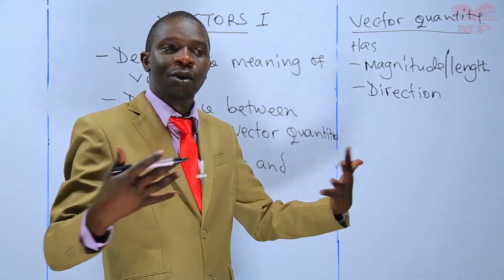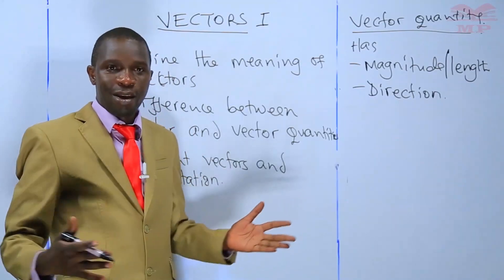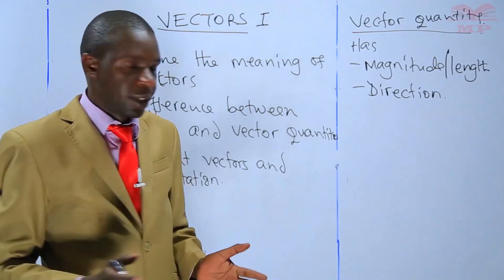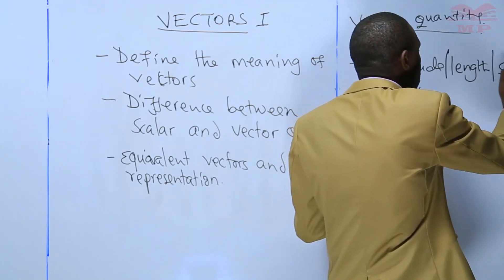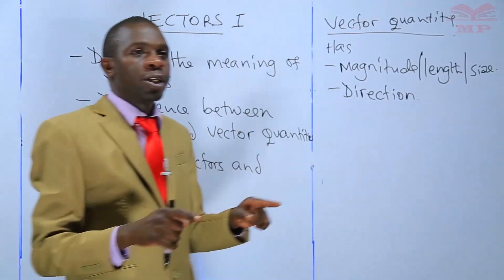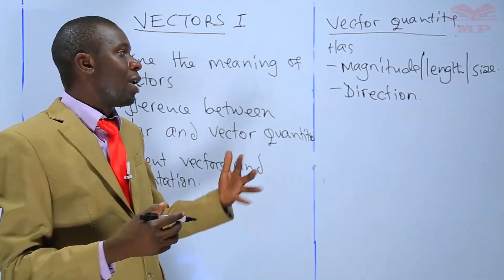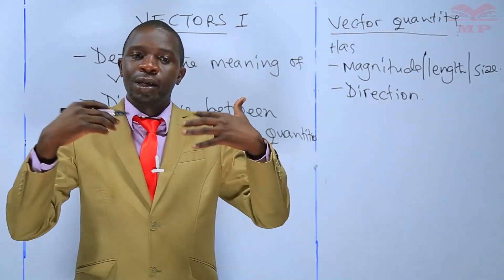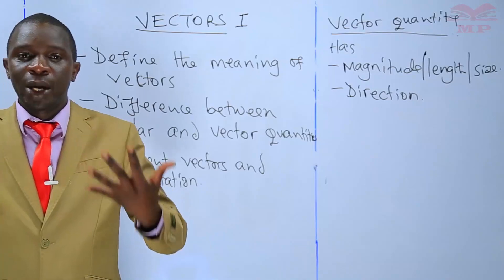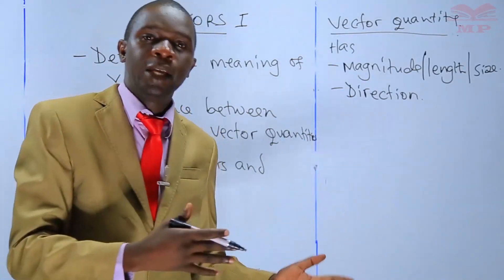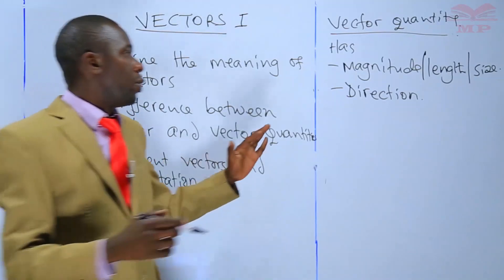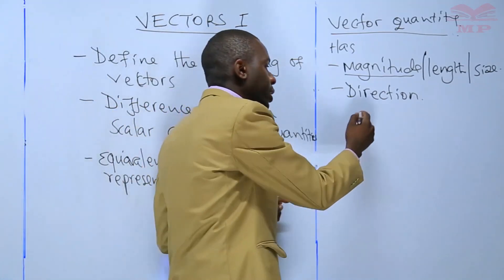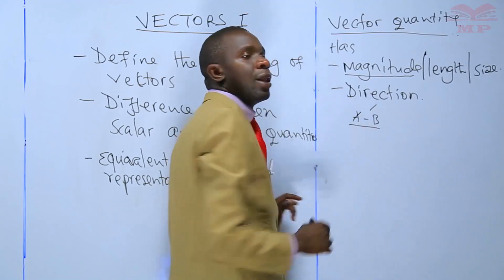When you look at a quantity, what is its size, what is the length? For example, you can say five kilometers, four centimeters, or 20 kilograms — that is the magnitude, the length or size. Direction refers to towards what particular place this length is moving. For instance, Mr. X traveled 20 kilometers from town A towards town B. The 20 kilometers is the magnitude and from town A to town B is the direction.